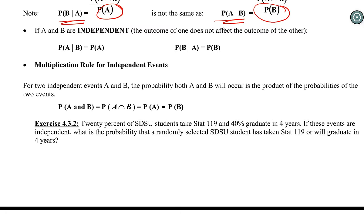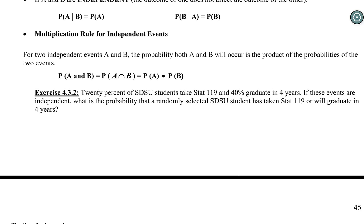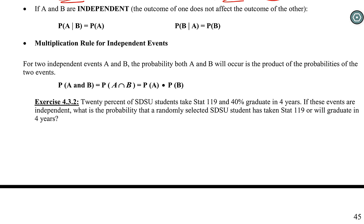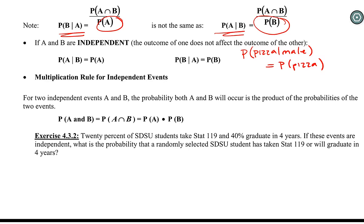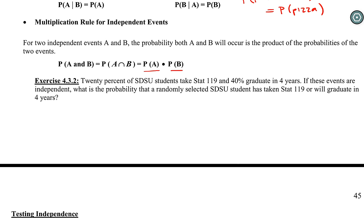The last piece is what happens with multiplication when we have independent events. If events are independent — one does not influence the other — then the probability of pizza given male is just the same as the probability of pizza. We can simplify our rule and just multiply the two probabilities directly together. This is ONLY allowed when we have independent events. Make sure I've told you they're independent or that you know for a fact there's no relationship before using this rule. I will not give this to you on the test, but you can write it on your notecard.